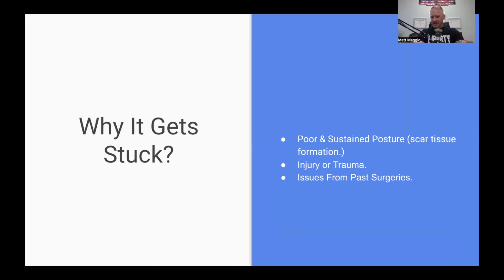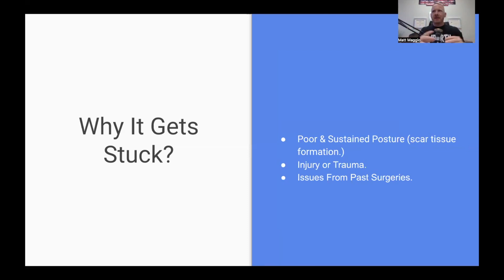So why does it get stuck? One is just poor and sustained posture. Over time, the muscles develop scar tissue. When scar tissue forms, it's like glue gets inside there — it makes the muscle less flexible, weak, gets bigger and bigger. Eventually it gets stuck to the muscle and the nerve. And then when that happens, you get numbness, aching, burning, and tension.